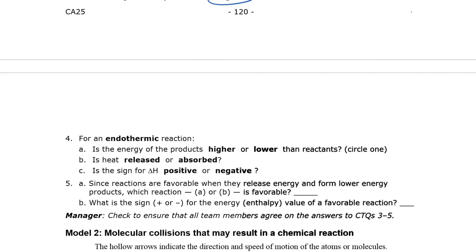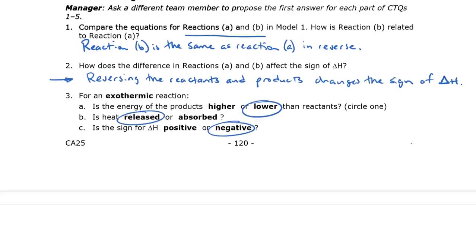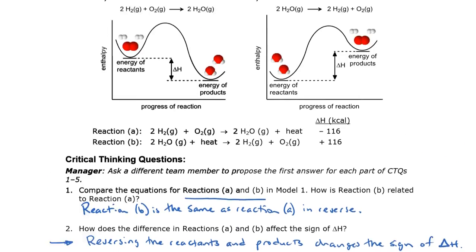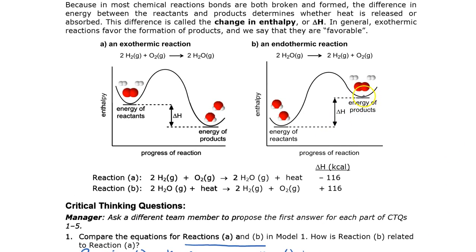Now you're going to answer the same thing for an endothermic reaction. Pause and circle your choices on A, B, and C. These are just the opposites of the exothermic reaction. If I look at the picture, I notice the energy of the products is higher than the reactants. In order to get that much energy, heat energy must be absorbed, and the sign is positive.